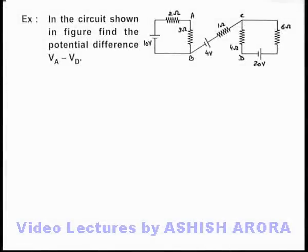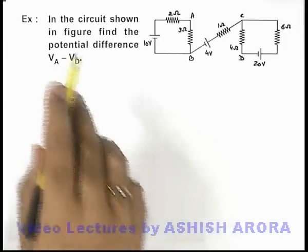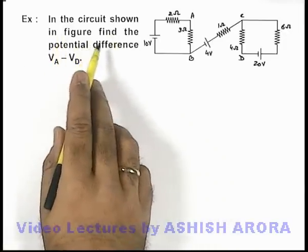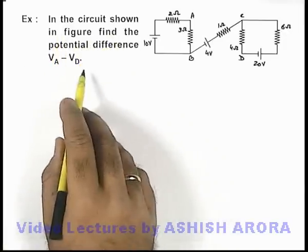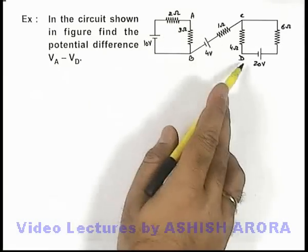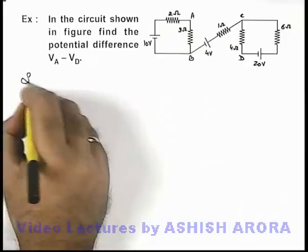In this example, we are given a circuit and in this circuit shown in figure we are required to find the potential difference across points V_A and V_D. We are required to find V_A minus V_D.